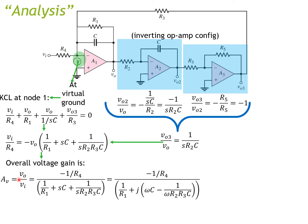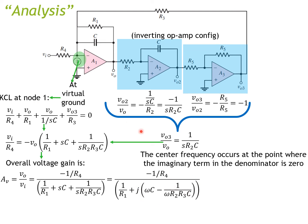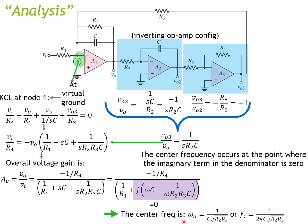Substituting s = jω and pulling out the j, we find the center frequency occurs where the imaginary term of the denominator becomes zero. Setting that term to zero, the center frequency is ω₀ = 1 / (C · √(R2·R3)), or equivalently F₀ = 1 / (2π·C·√(R2·R3)).